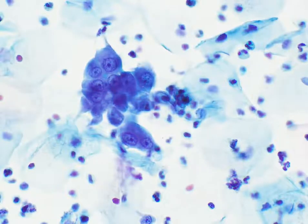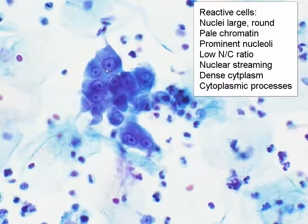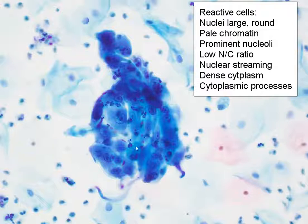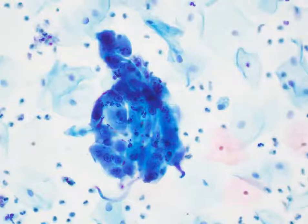This is quite characteristically seen in repair or reactive cells. To summarize the features we can see in reactive cells: large nuclei, usually fairly open chromatin, prominent nucleoli, relatively low NC ratios. Sometimes we can see streaming of the nuclei, which appear to go in one direction. The cytoplasm is usually fairly dense, and occasionally we can also see inflammatory cells admixed with these cell groups. So this is a non-neoplastic cause of hyperchromatic crowded groups.